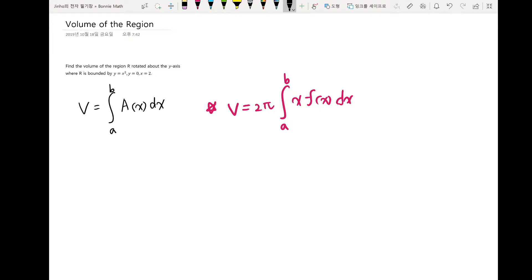But we have lots of things to memorize anyway. So for washer method, I will just leave it as it is, which is multiplying the formula for circle π r square times dx. So let's start this question now.